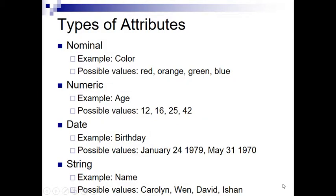So we talked about how there are four basic types. Nominal, which is where there are discrete categories that are values for an attribute. Numeric, where the values are numbers and those can be integers or real values. Date, which could be something like January 24, 1979 or May 31, 1970. Or String, which can be some arbitrary text.